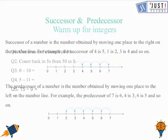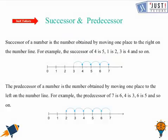We are good to move ahead to learn more about successors and predecessors. Successor of a number is the number obtained by moving one place to the right on the number line. For example, let's see the successor of 4. 4 is sitting here on the number line and the number sitting right to it is number 5. So we can say that 5 is a successor of 4. Similarly, the successor of 1 is 2, the successor of 3 is 4, and so on.